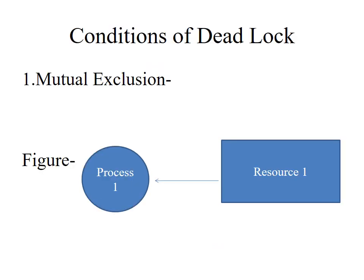Now see the mutual exclusion condition. Mutual exclusion means a resource that can only be held by one process at a time. In the figure, a single process and single resource are shown. Resource 1 is allocated to process 1, meaning only one process can allocate only one resource; no one else can allocate resource 1. This is called mutual exclusion.